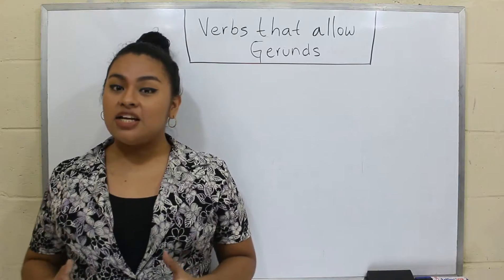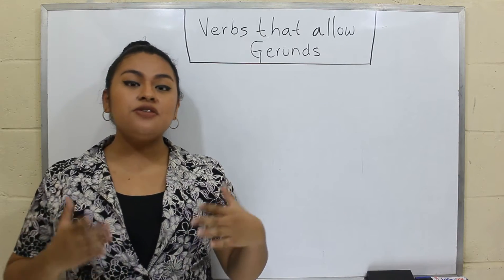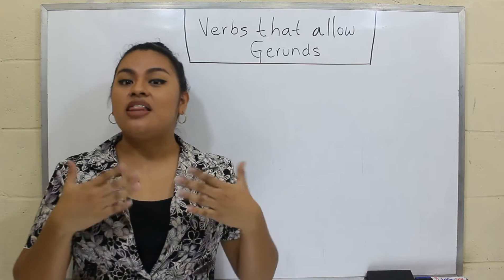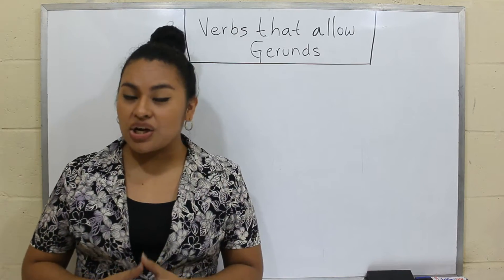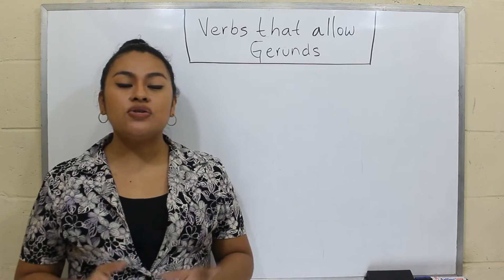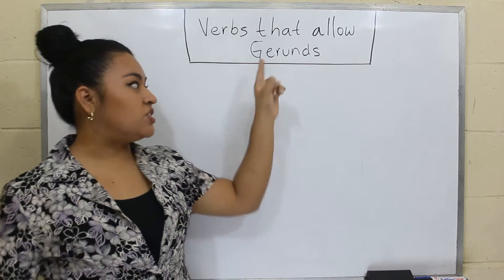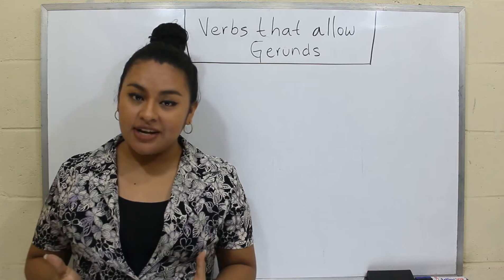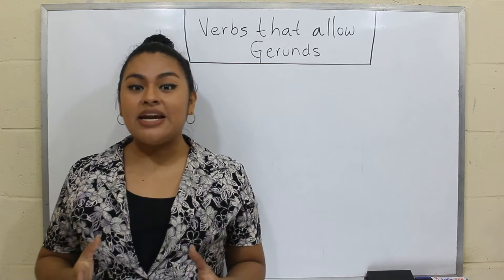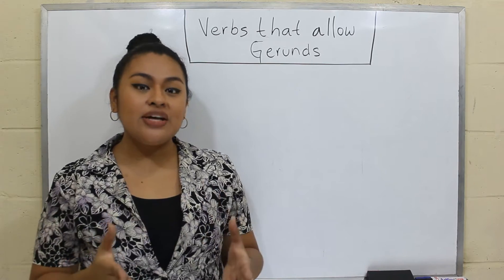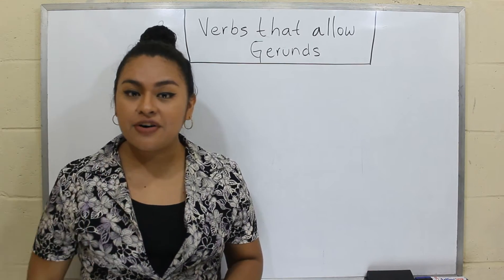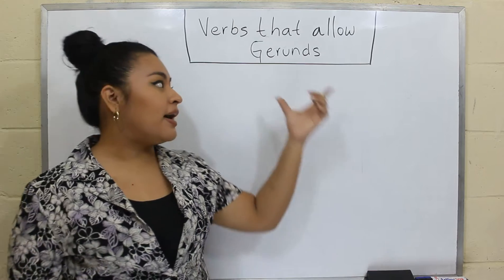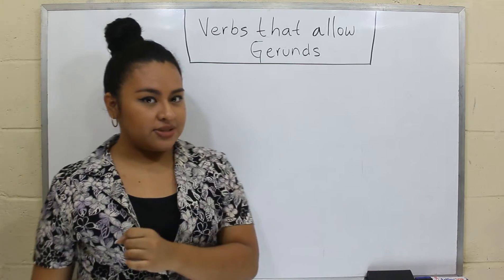In English, if we want to follow the main verb of a sentence with another action, we must use either a gerund or an infinitive. So right now, we are going to see a list of 48 verbs that are followed by gerunds.